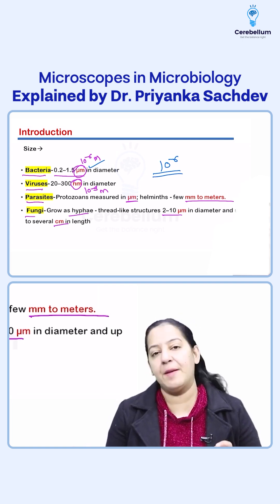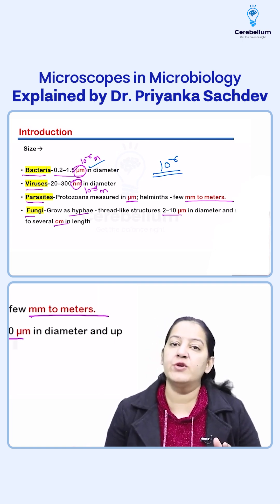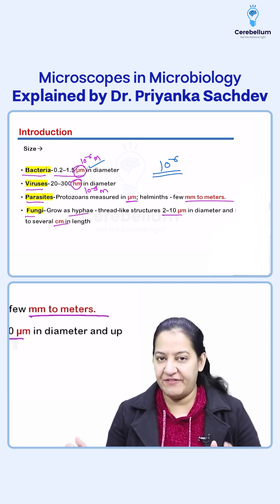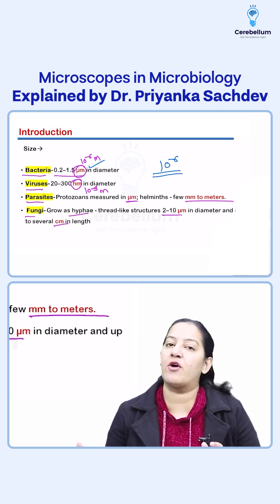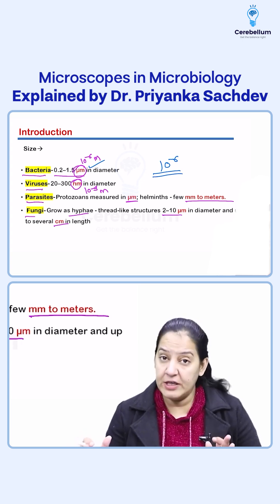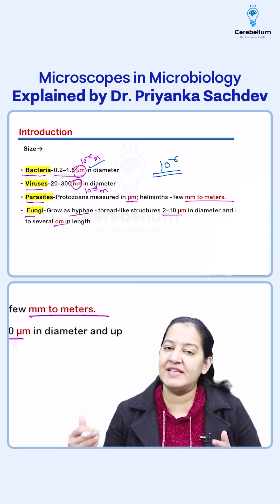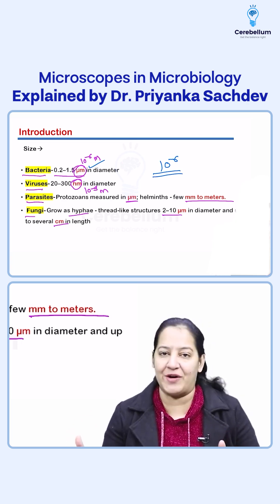If we want to see the viruses with the help of microscope, we have to use electron microscope. So I will be telling you the magnification power and the resolution power of various types of microscopes so that you will have a better understanding for the uses of microscope, which microscope is better used for visualizing which structure or microorganism.